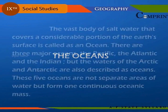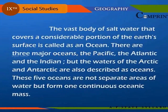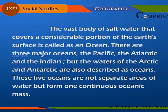The vast body of salt water that covers a considerable portion of the Earth's surface is called an ocean. There are three major oceans: the Pacific, the Atlantic, and the Indian. But the waters of the Arctic and Antarctic are also described as oceans. These five oceans are not separate areas of water but form one continuous oceanic mass.